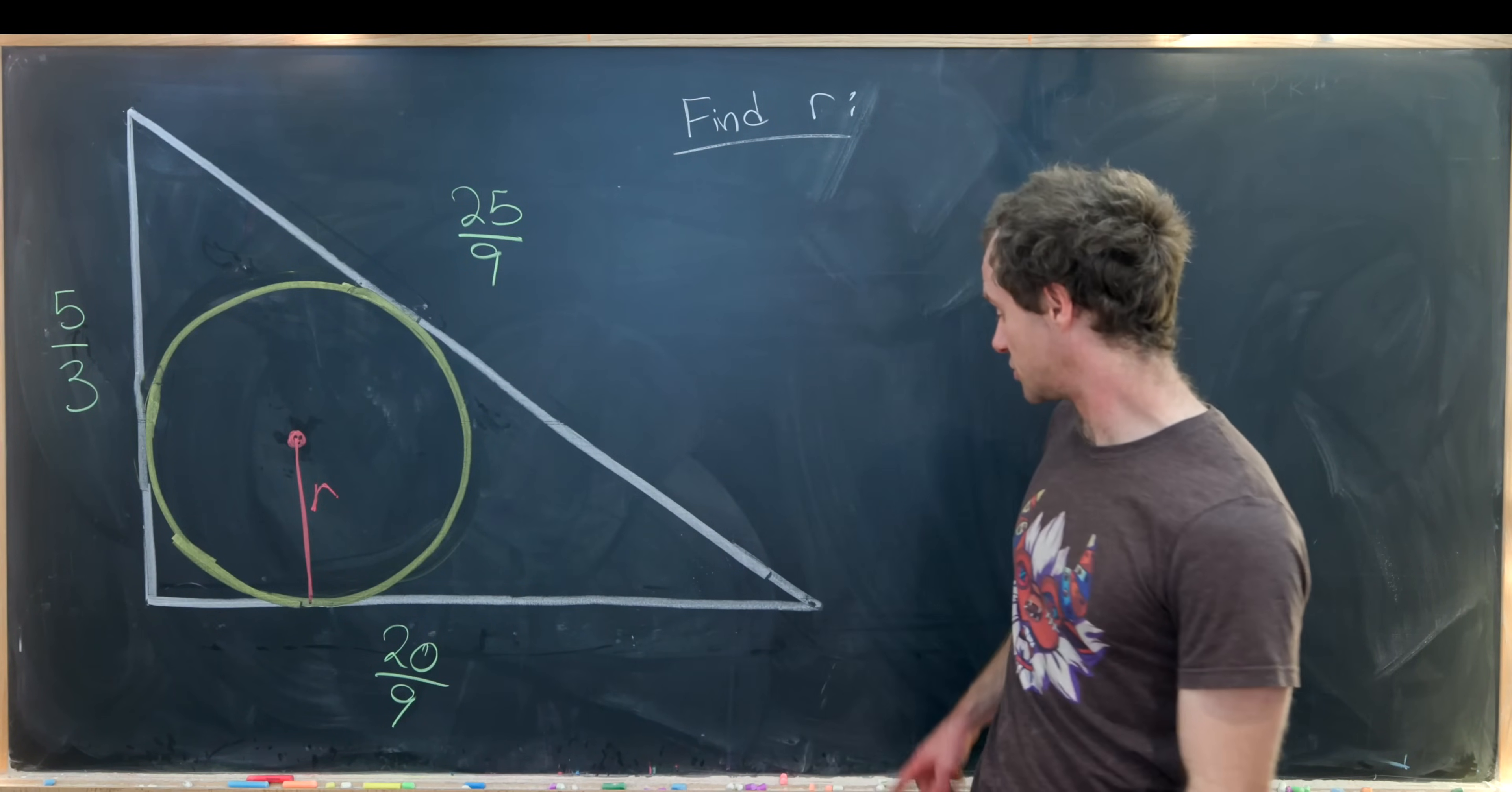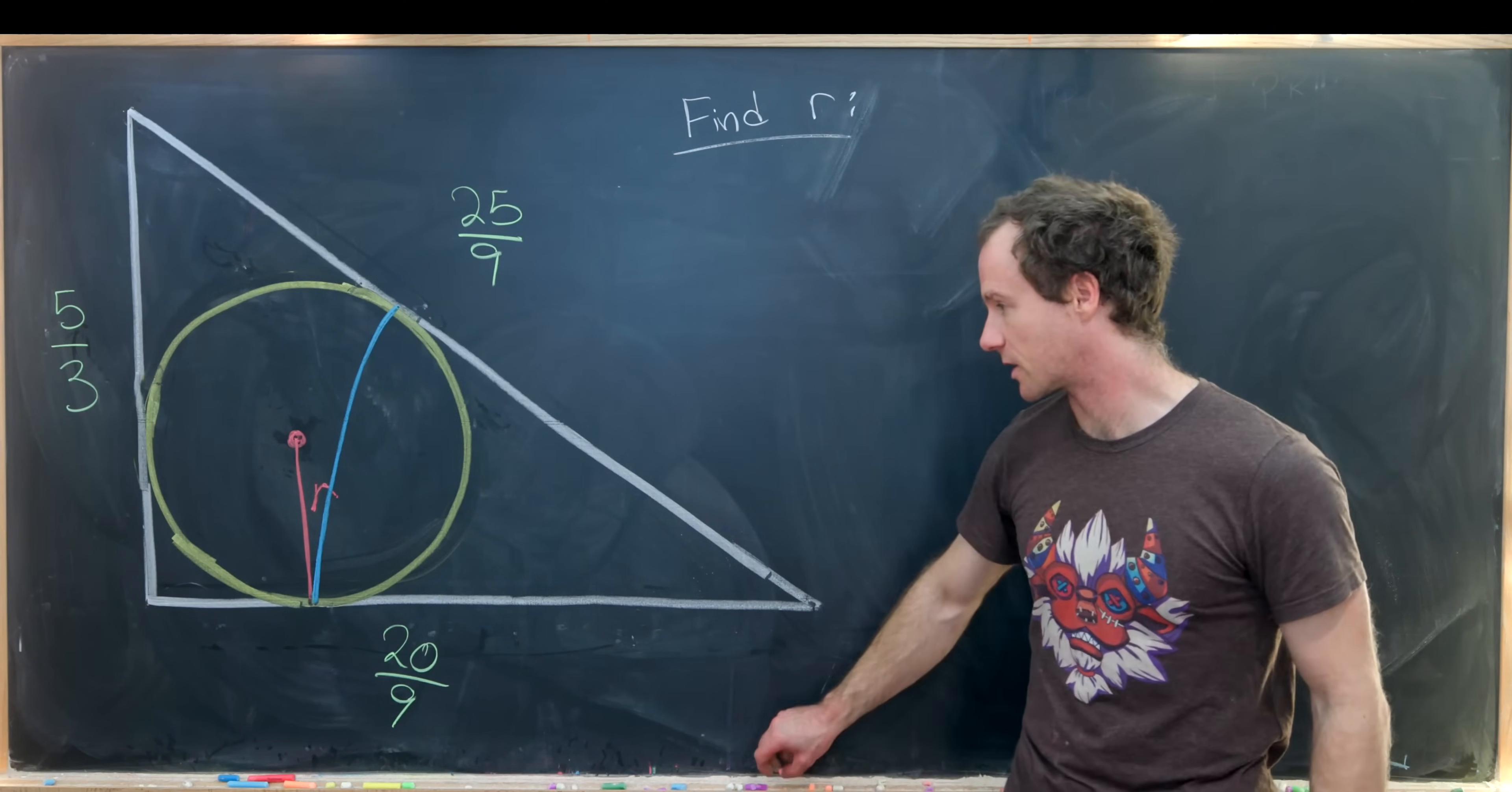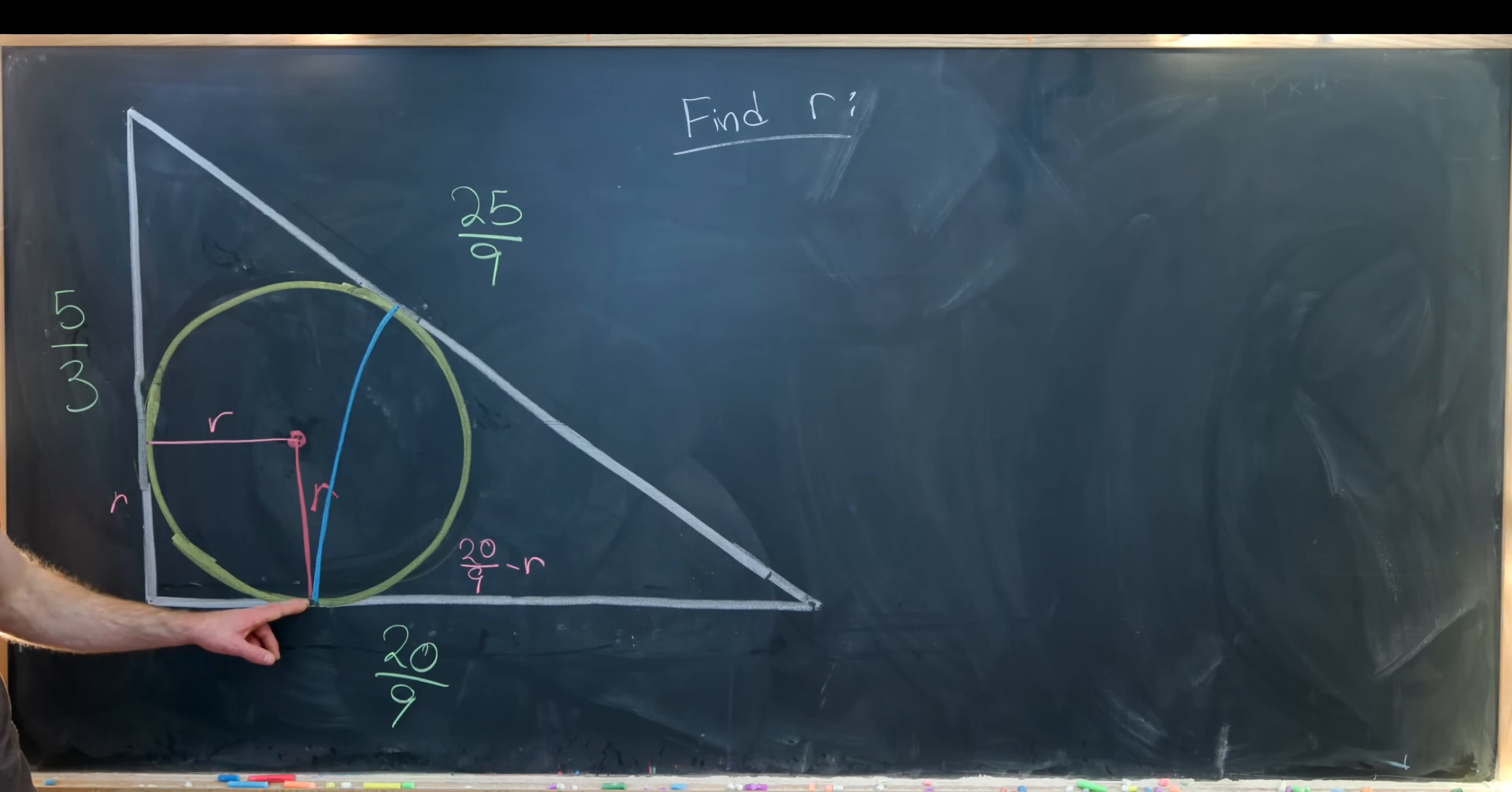The first circle that we'll introduce will be centered here at this vertex, and its radius will be the distance from this vertex to this intersection point where this comes from the center of the circle intersecting orthogonally with this side length. If this is length r, the radius of our circle, then this is also length r as well, because we have a right angle here. This is completing a square with side length r. This entire thing is 20 over 9, which means what's left over is 20 over 9 minus r. So that's the radius of this circle, which is in blue.